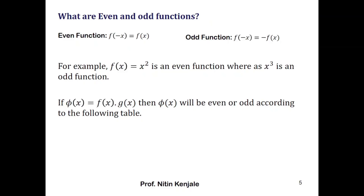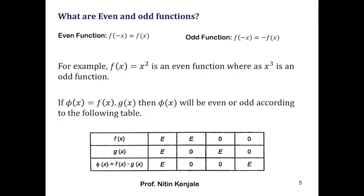Now we see the nature of the product of two functions that are either even or odd, explained using the following table. If f(x) and g(x) are both even, their product is also even. If either one is odd and the other is even, their product is always odd. If both functions are odd, their product is even.